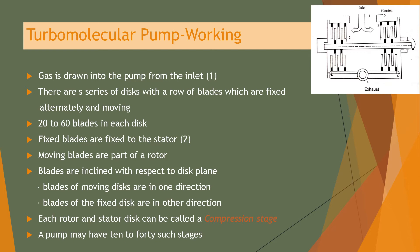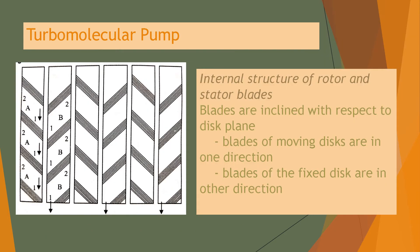Each rotor can be called a compression stage, and a pump may have 10 to 40 such compression stages. This represents the internal structure of rotor and stator blades, where the blades are inclined with respect to the disc plane in two directions — blades of the moving disc in one direction and blades of the fixed disc in the other.